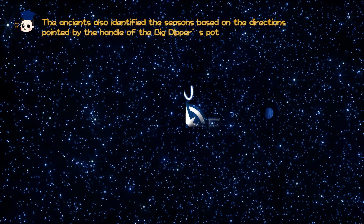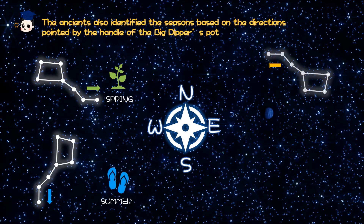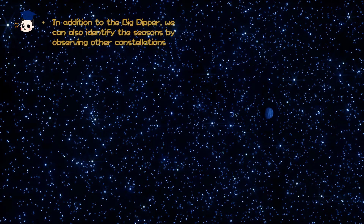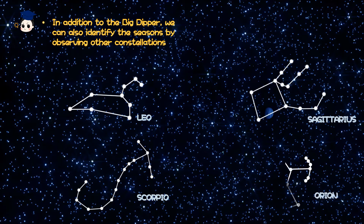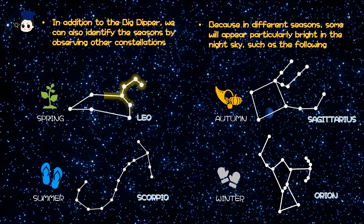The ancients also identified the seasons based on the directions pointed by the handle of the Big Dipper's cup. In addition to the Big Dipper, we can also identify the seasons by observing other constellations. Because in different seasons, some will appear particularly bright in the night sky such as the following.